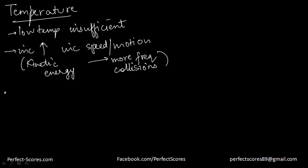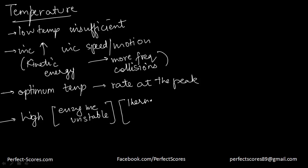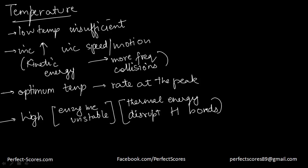At an optimum temperature, which differs for different enzymes, the rate of reaction is at its peak. But if the temperature exceeds this optimum, enzyme stability decreases. The excess thermal energy disrupts the hydrogen bonds holding the enzyme together, causing the enzyme to lose its shape and lose activity — a process known as denaturation.